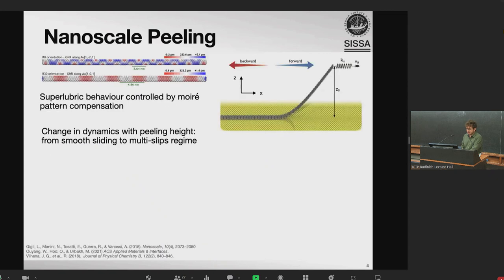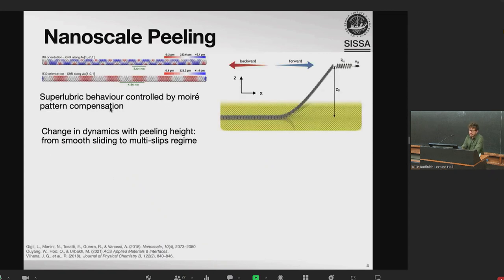So this experiment sparked some interest. And in particular, here in Trieste Gilly and coworkers modeled the interface, understanding that the superlubric behavior is controlled by the moiré pattern compensation of the nanoribbon, which depends on the orientation. And in particular, there is always a bit of stick slip residual due to the fact that at the tail and at the peeling front, the moiré is not compensated. So you always have a bit of a stick slip of the nanoribbon. And also they found that the dynamic of the system is quite rich, and it depends heavily on the lifting height of the nanoribbon. So if you lift a little and you start sliding, it's a smooth sliding, but as you increase the lifting height and you drag the ribbon around, the system changes the dynamic and undergoes some multi-slip regimes with some hysteresis between the back and forth direction.